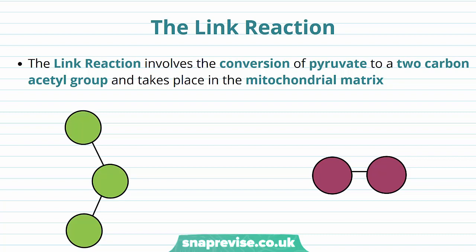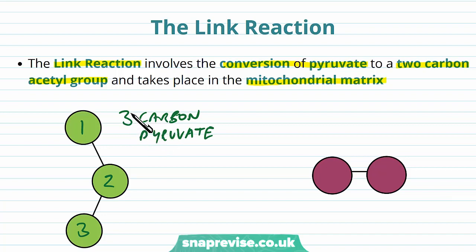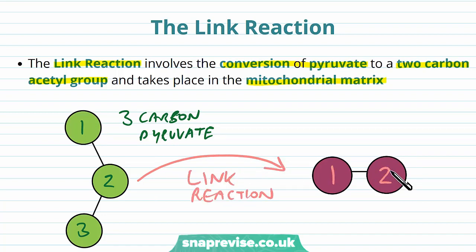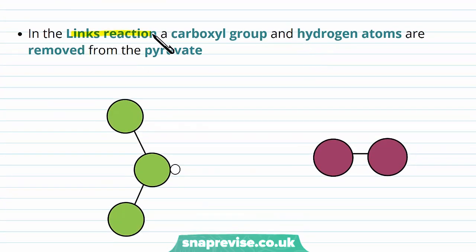The next stage of respiration, once the pyruvate is in the matrix, is called the link reaction. The link reaction overall involves converting pyruvate to a two-carbon acetyl group, and it takes place in the mitochondrial matrix. So at the end of glycolysis we've got a three-carbon pyruvate — and remember there are actually two of these made per glucose, but we'll go through as if there's only one. This gets converted in the link reaction to a two-carbon acetyl group. In the link reaction, a carboxyl group and hydrogen atoms are removed from the pyruvate. Sometimes you'll see 'link' or 'links' reaction — it means the same thing.